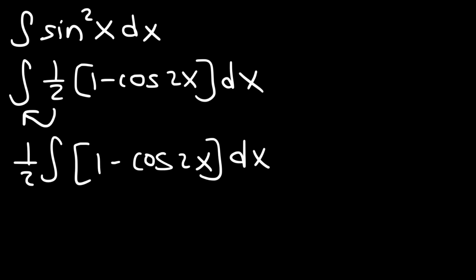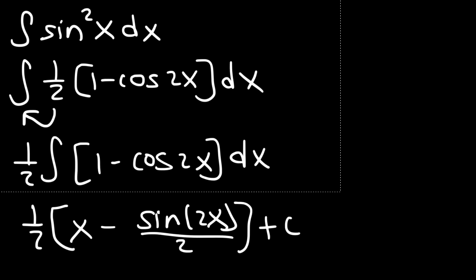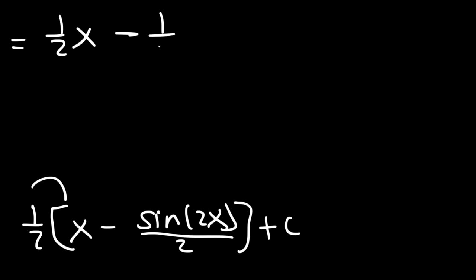Now at this point we can integrate the function. The antiderivative of 1 dx is x. And the antiderivative of cosine 2x is sine 2x divided by 2. Distributing the 1/2, it's going to be 1/2 x minus 1/4 sine 2x plus c. And so this is the answer for this problem.